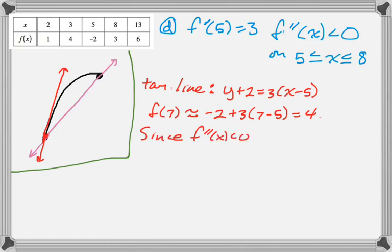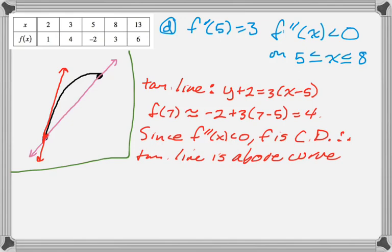And then we just have to justify this. So since f double prime is less than 0, we know that f is concave down. Remember, your graph cannot be your justification. You have to actually write this out. So you're just writing out what the graph shows you. f is concave down, therefore the tangent line is above the curve. And if your tangent line is above your curve, you get an overestimate. So f of 7 has to be less than or equal to 4, because that was the tangent line approximation.